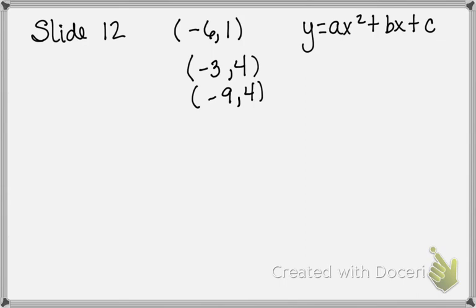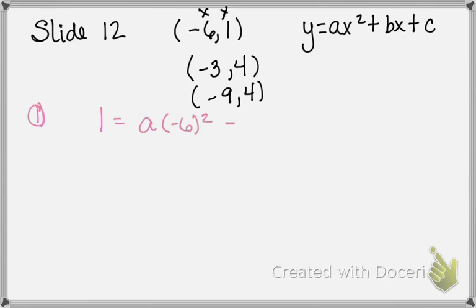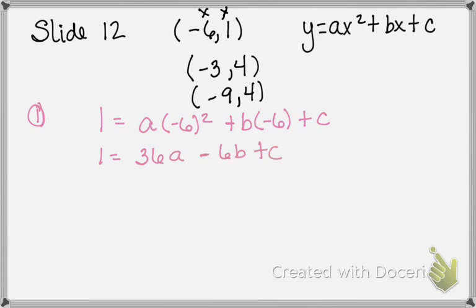We're going to create three equations in our standard form so that we can try to solve and find what a is, what b is, and what c is. So the first one — these are our x's and y's — we're going to plug it in. Our first equation: y, which is 1, is equal to a times negative 6 squared plus b times negative 6 plus c. We simplify: 1 equals 36a minus 6b plus c. That's our first one.